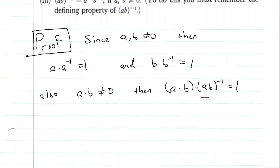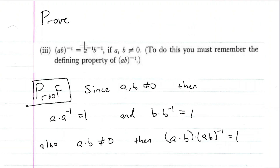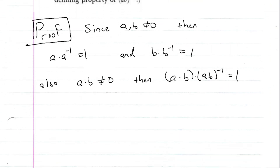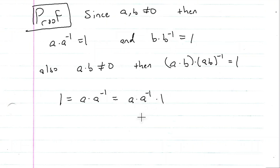We're going to get from this equation to this equation by employing a trick from a previous video. We know that one is equal to a times its inverse times one. But we also know that one is equal to b times its inverse. So we have one is equal to a times its inverse times b times its inverse.